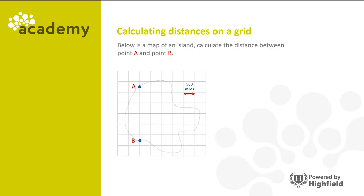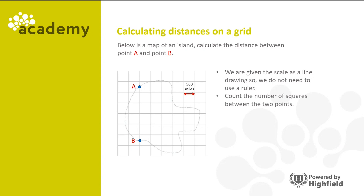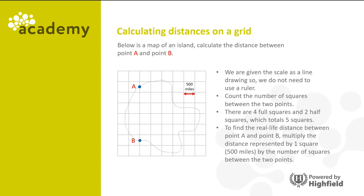Below there's a map of an island. Find the distance between point A and point B. We're given a scale as a line drawing, so we don't need to use a ruler. Count the number of squares between the two points. We can see there are four full squares and two half squares, which is a total of five squares. To find the real life distance, we multiply the distance represented by one square, which is 500 miles, by the number of squares, giving us 2,500 miles.